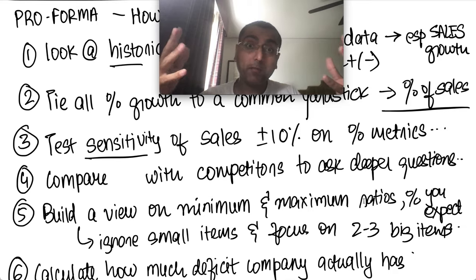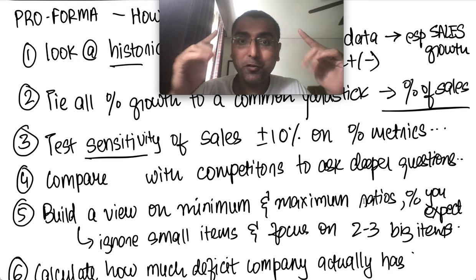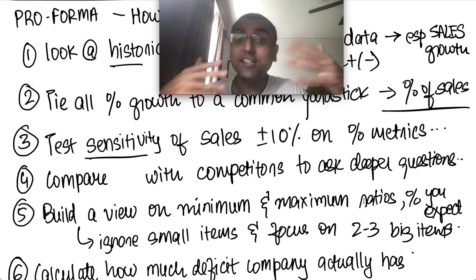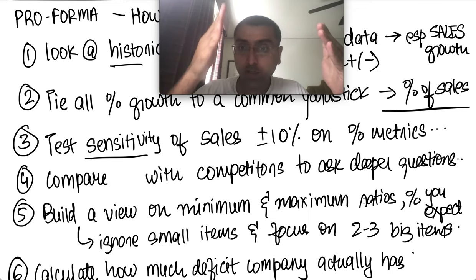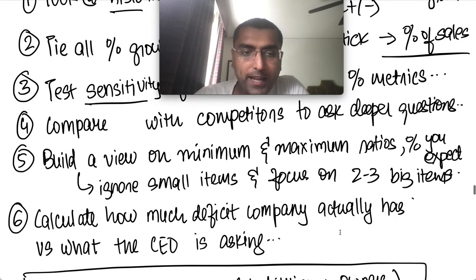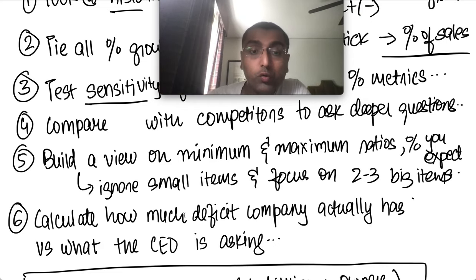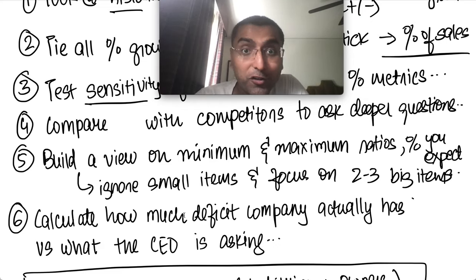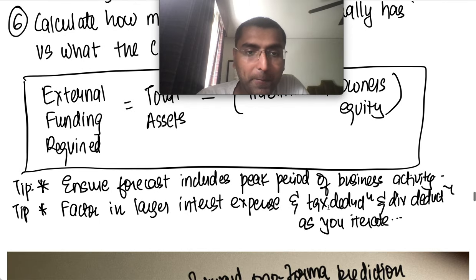For example, if accounts receivable, inventory, and debt-to-equity are all going up, you set lower and upper bounds and make rules: 'I will only give a loan if these milestones are hit.' Similarly, as a new business owner, you look at each ratio and try to make improvements. Then you calculate the deficit — project future values, and the formula is: total assets minus liabilities minus owner's equity.